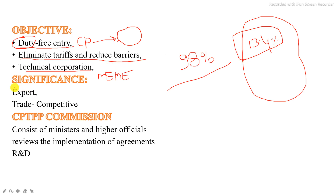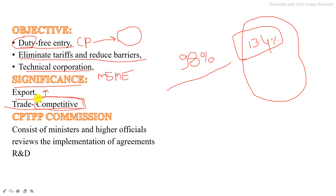Now let's look at the significance. Obviously, exports will boom — there will be an enhancement in exports. Trade will become competitive in particular countries. When trade becomes competitive, investment increases, jobs are created, and the economy develops. The domestic industries will also see advancement in technology and innovation.